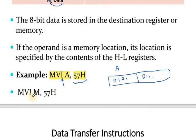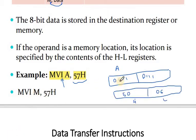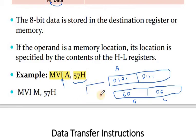Another example: MVI M, 57H. Here M is the memory location whose address is given by the HL register pair. So the memory location pointed to by HL — suppose HL contains address 5006 — 57H (8 bits) is stored in that memory location 5006.